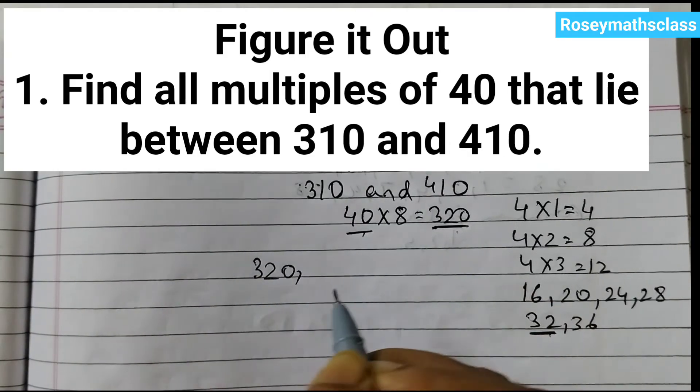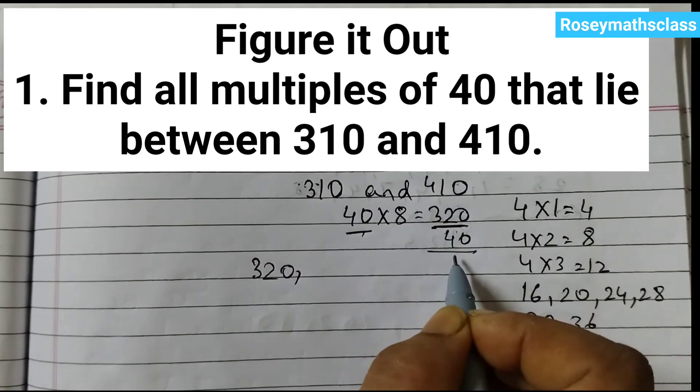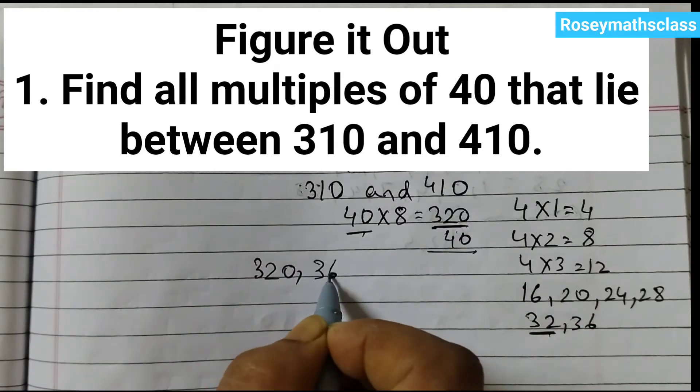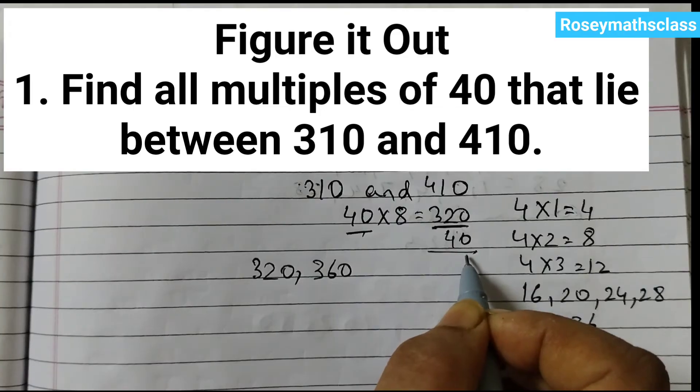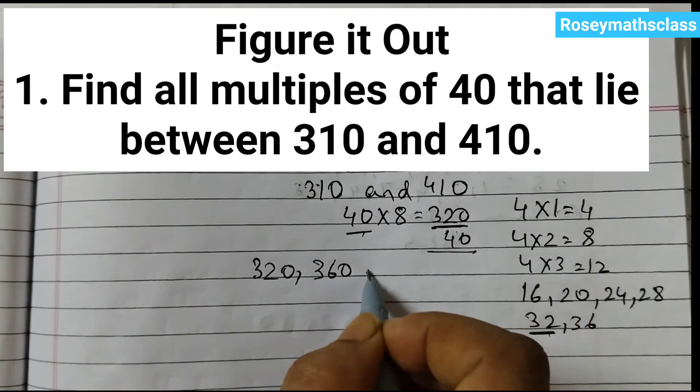The second multiple would be just add 40 to this, that will be 360. Again, add 40 to this, that would be 400.